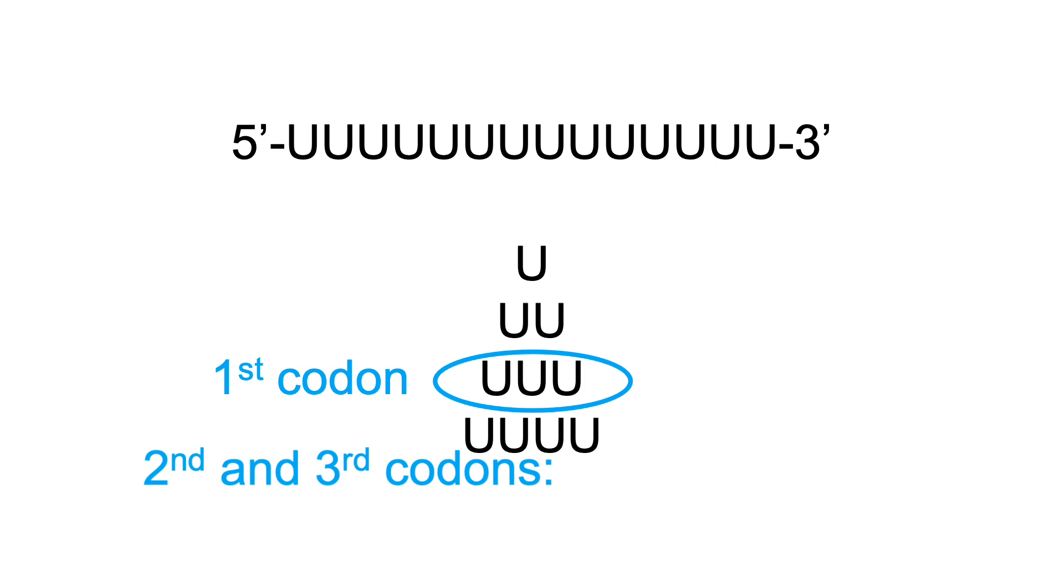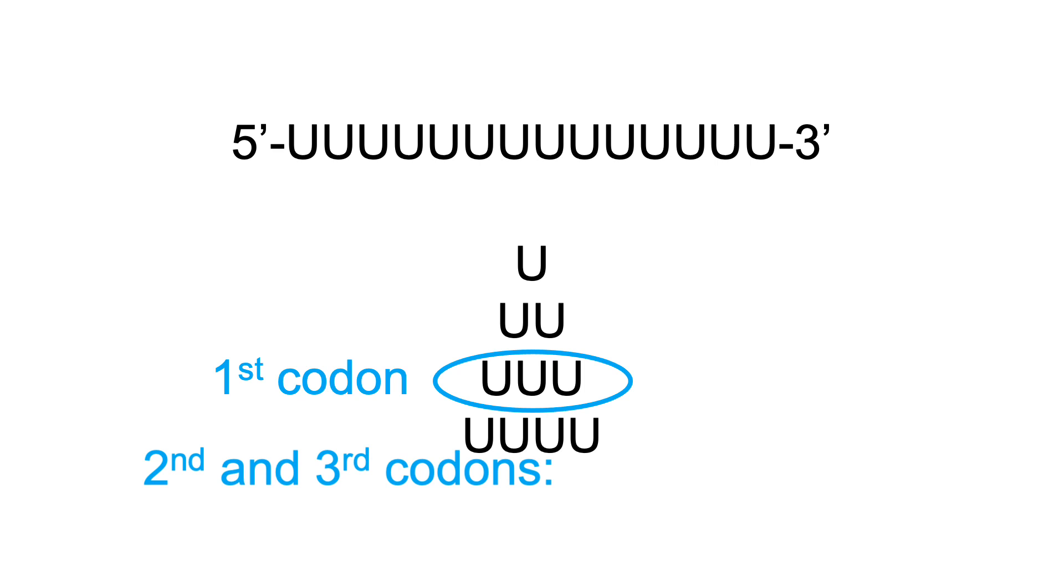Nirenberg could now confirm they had found the first codon, UUU, encoding phenylalanine, and further utilize this technique to discover codons AAA and CCC encode amino acids lysine and proline respectively.